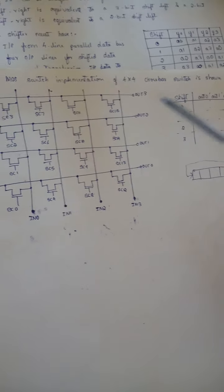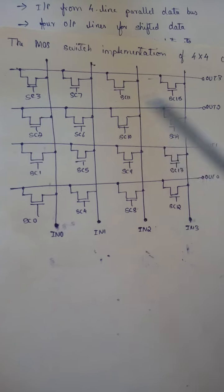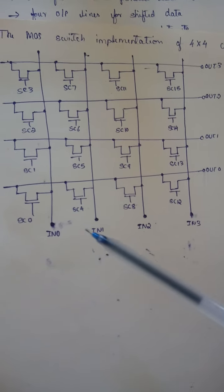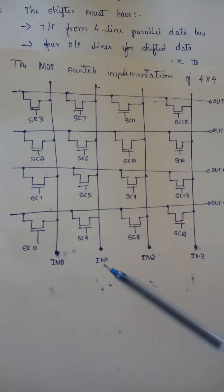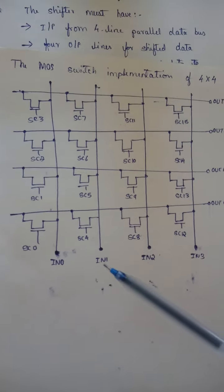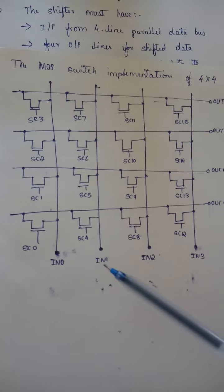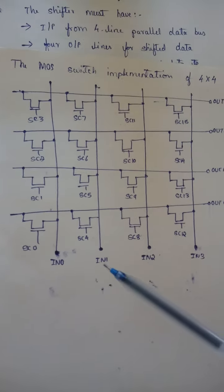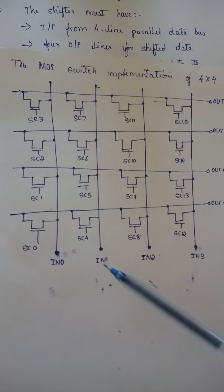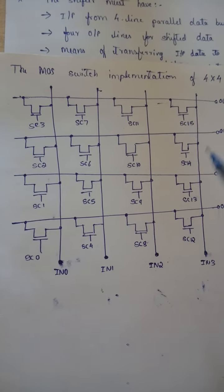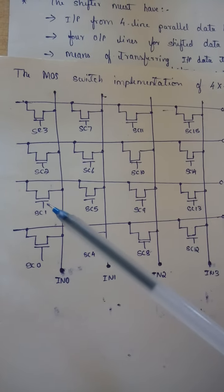Generally, what the shifter must have: it must have input from a four-line parallel data bus, four output lines for the shifted data, and a means of transferring input data to output lines with any shift from zero to three bits. This is how a 4-bit shifter has to be designed.